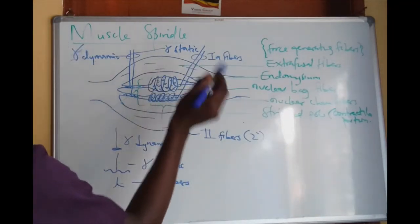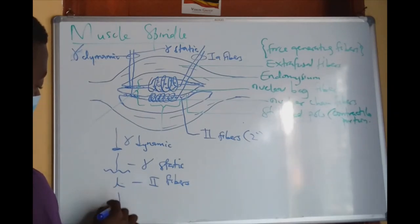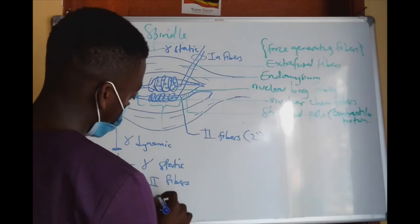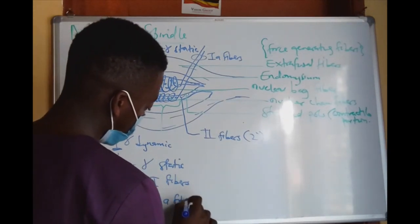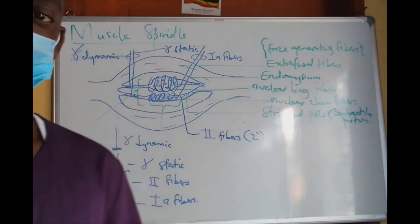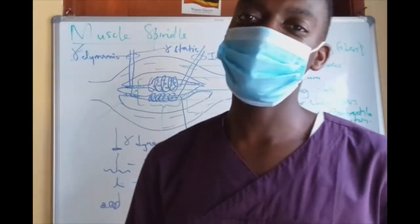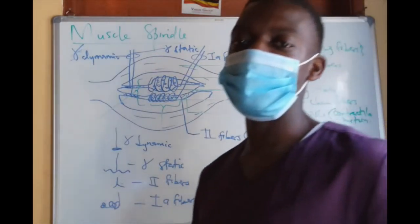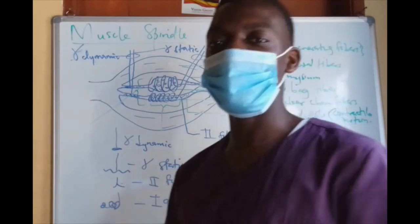Then Group 1A fibres form the annulospiral ending — wrapping in a spiral around the central receptor region. That is the appearance of nerve endings of the muscle spindle. Subscribe to Science Theatre. Thanks for following. Goodbye.